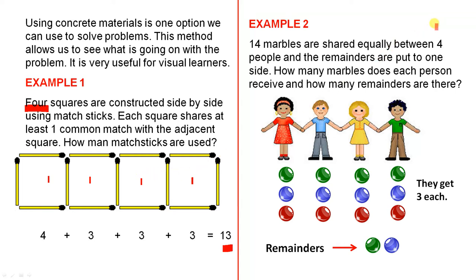Example two. 14 marbles are shared equally between four people, and the remainders are put to one side. How many marbles does each person receive, and how many remainders are there? Now, there are 14 marbles altogether. So here are the four people. If we give three marbles to each person, that makes 12 altogether, and then we have two left. So to answer the question, they get three each, and the remainder, there are two of them.